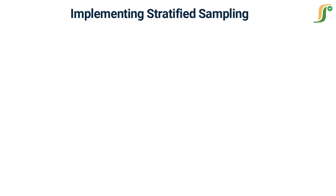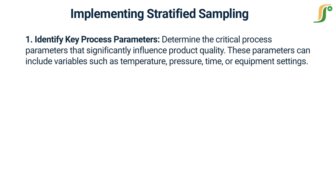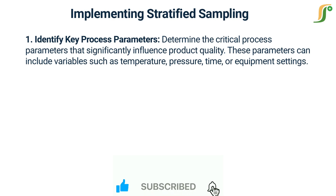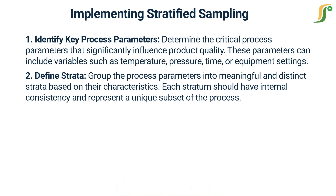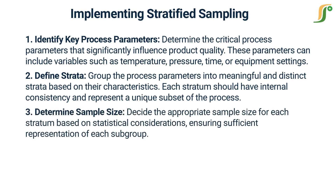Stratified sampling in process validation can be implemented in five simple steps. Step one: identify key process parameters — determine the critical process parameters that significantly influence product quality. These parameters can include variables such as temperature, pressure, time, or equipment settings. Step two: define strata — group the process parameters into meaningful and distinct strata based on their characteristics. Each stratum should have internal consistency and represent a unique subset of the process. Step three: determine sample size — decide the appropriate sample size for each stratum based on statistical considerations, ensuring sufficient representation of each subgroup.